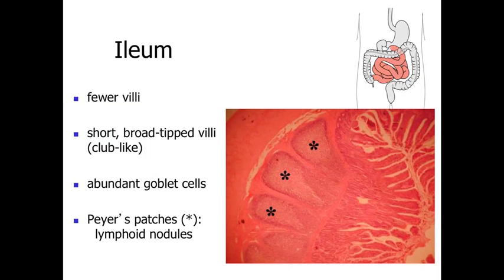The final region of the small intestine is the ileum — a shorter region that exits into the large intestine. It has fewer villi, and the villi have a short, almost broad or club-like appearance. They are lined primarily with goblet cells, though some absorptive cells with microvilli are still present. The ileum is characterized by Peyer's patches within the walls — lymphoid nodules that are circular aggregates of small lymphocytes with germinal centers containing activated lymphocytes, likely producing antibodies in response to materials passing through and mounting an immune response.